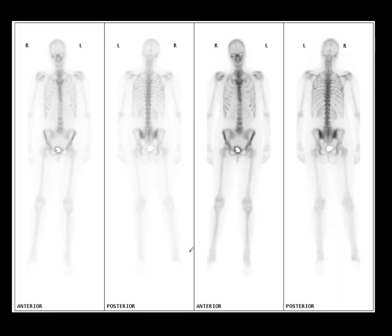A couple more examples of fibrous dysplasia, because it's an important one. Here's a patient with a focal area of activity around the orbit. One possibility is contamination — if a patient is passing urine and touches their face, they can leave a small amount of radioactive urine there. Cleaning the area and repeating a spot view can help eliminate this. In this case, however, we thought it was a genuine abnormality.